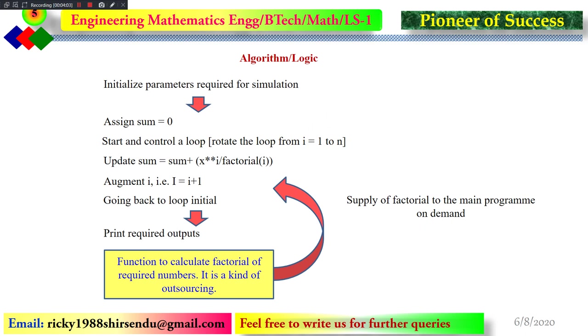We will augment the i to i plus 1, and then again it will go to the loop and it will calculate for n times and it will update the sum. The final value of the sum will be the value of the series. During this calculation, this factorial will be required, that is factorial of i, factorial of 1, factorial of 2, factorial of 3.